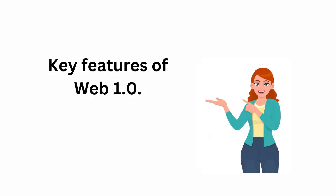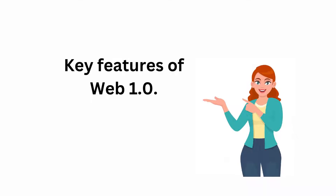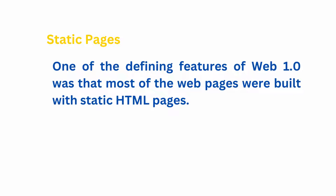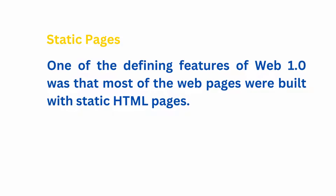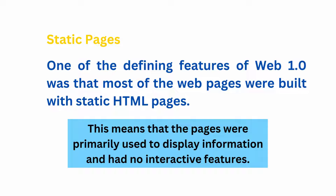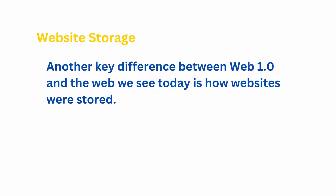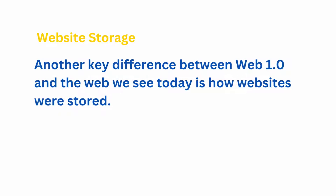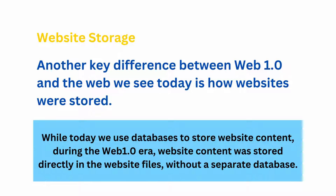Let's take a closer look at some of the key features of Web 1.0. Static pages: one of the defining features of Web 1.0 was that most web pages were built with static HTML pages, meaning they were primarily used to display information and had no interactive features. Website storage: another key difference is how websites were stored. While today we use databases to store website content, during the Web 1.0 era, website content was stored directly in the website files, without a separate database.